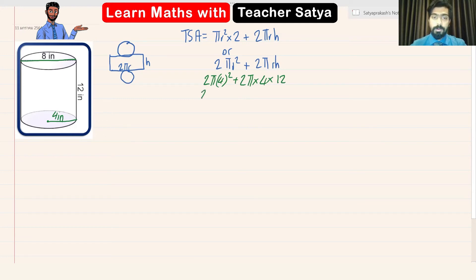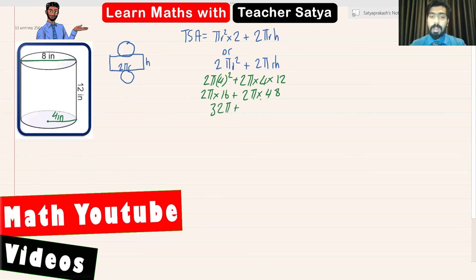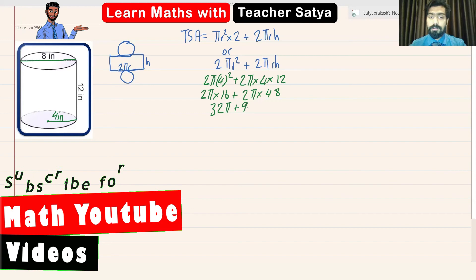Now let's break the bracket. So we would have two pi multiplied by sixteen plus two pi multiplied by forty-eight. Right, guys? Now, two pi times sixteen is going to give us thirty-two pi plus two pi times forty-eight is going to give us ninety-six pi. Right, guys?